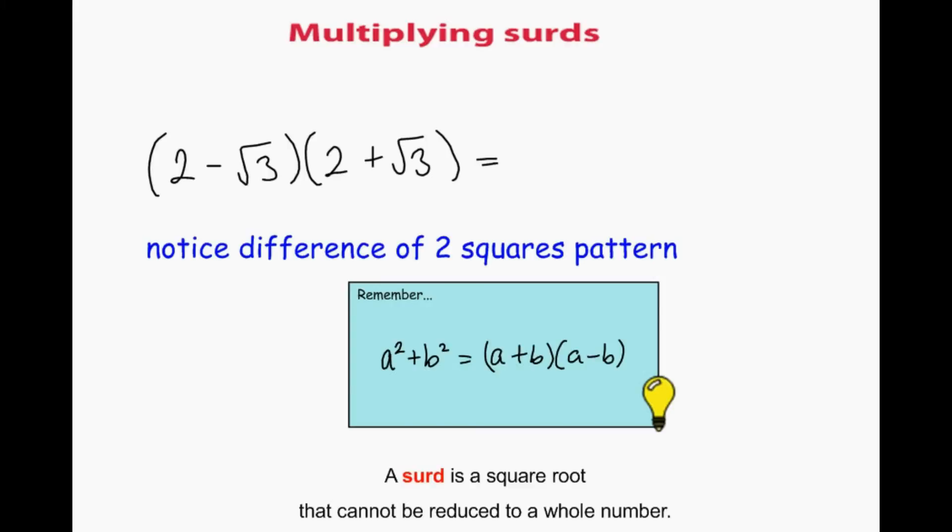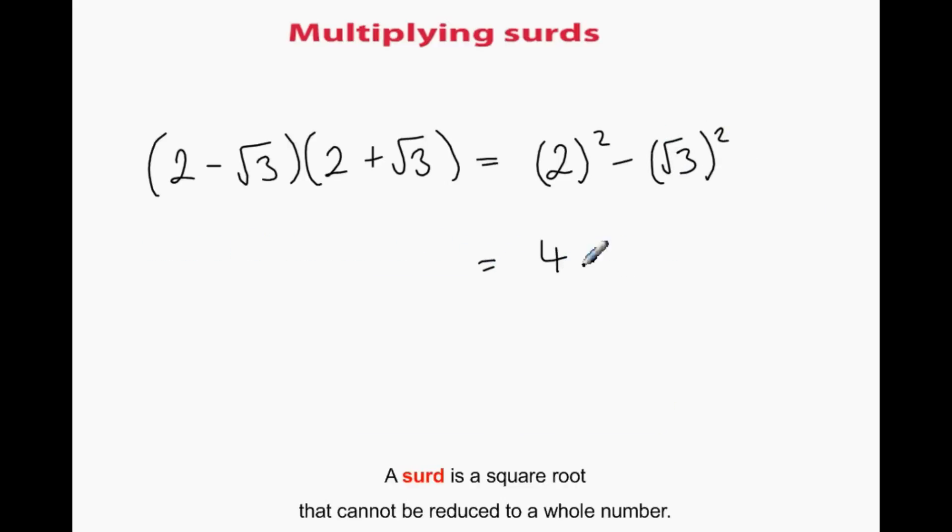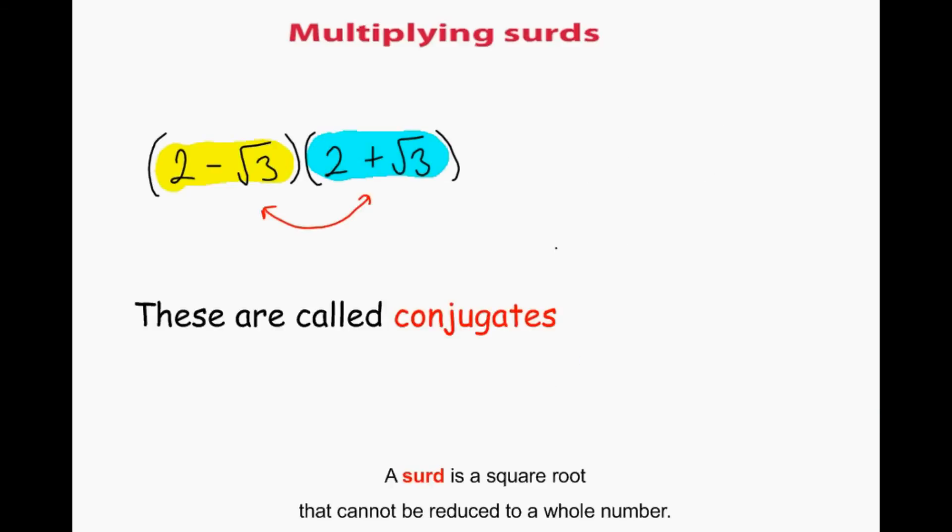There's an easier way of doing this if we notice the pattern with the difference of two squares. So this is just 2 squared minus root 3 squared. 2 squared is 4 minus 3, which is just 1. And we should notice this.